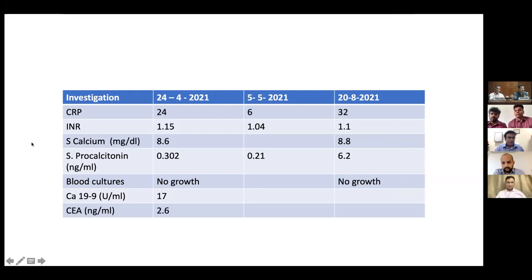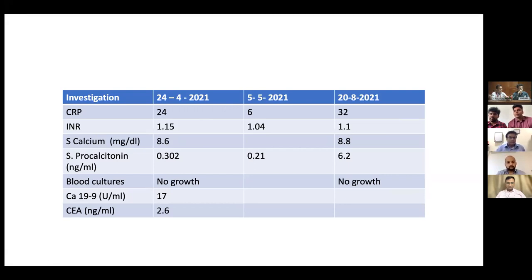Coming to serum calcium: on both admissions, serum calcium was normal. Inflammatory markers: CRP was high in the current admission and also in the old admission, which came down before discharge. Most importantly, procalcitonin was normal during the first admission, but here it is 6.2 — which is significant. Procalcitonin can rise in acute pancreatitis even without infection, but beyond 2.2 to 2.5 it signifies ongoing infection. Blood cultures were normal. Regarding etiological workup to rule out malignancy, CA 19-9 and CEA were done and are within normal limits, ruling out hypercalcemia-induced and malignancy-induced pancreatitis.